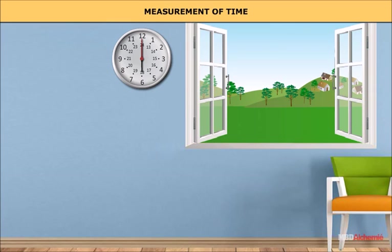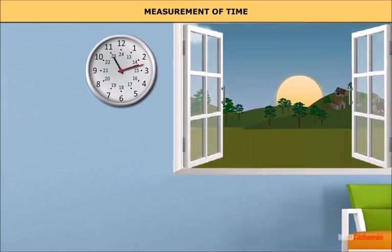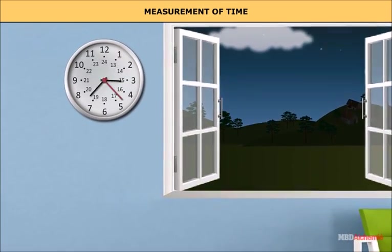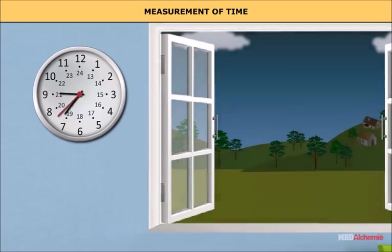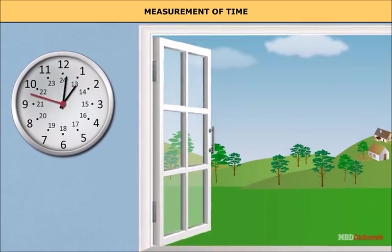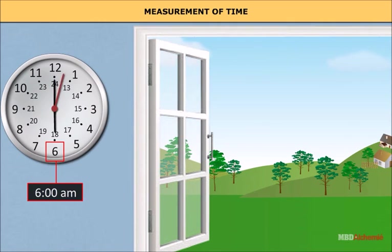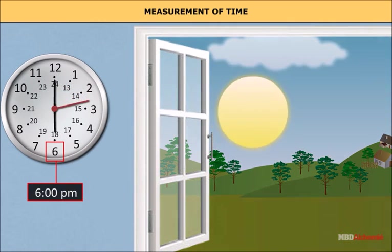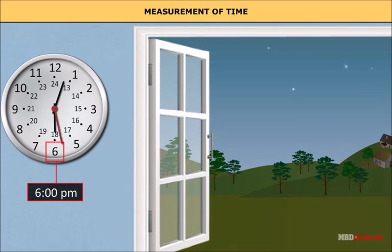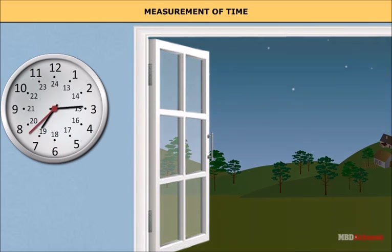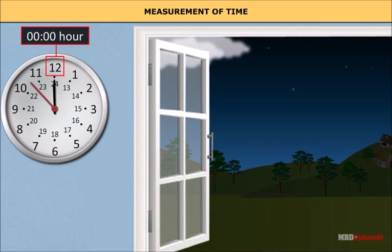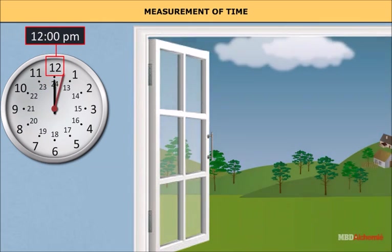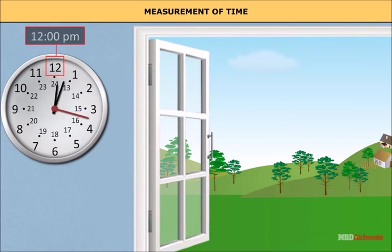Measurement of time. Time is a measure in which events can be ordered from the past through the present into the future, and also the measure of durations of events and the intervals between them. Time is often referred to as the fourth dimension along with the three spatial dimensions. The cesium atomic clocks are very accurate. In principle, they provide a portable standard. The national standard of time interval second, as well as the frequency, is maintained through four cesium atomic clocks.